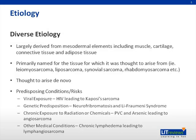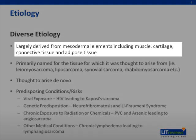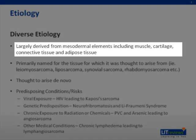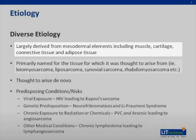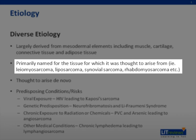As in most things, we need to discuss the etiology. Soft tissue sarcomas have a very diverse etiology. They're largely derived from mesodermal elements, including muscle, cartilage, connective tissue, and adipose tissue. Like most types of tumors, sarcomas are described from the tissue from which they arise — such as a leiomyosarcoma, derived from smooth muscle; a liposarcoma, derived from adipocytes and fat cells; and a rhabdomyosarcoma, derived from other types of muscle.